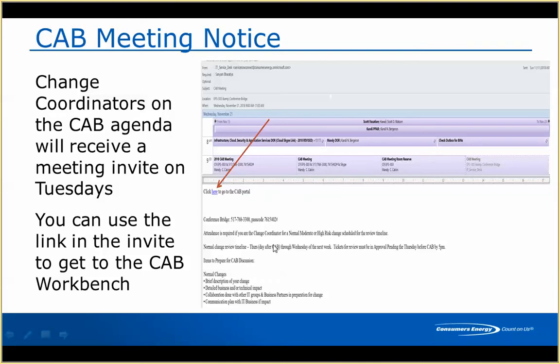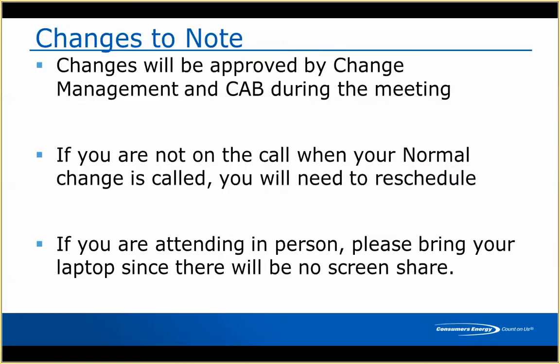The meeting request has the same information as our current CAB meetings — the login number and the things you generally need to go over and be ready for when you come to CAB. One of the nice improvements is that changes will be approved by the change management team and the CAB team during the meeting, so you won't have to wait after the CAB meeting — sometimes the same day, the next day, or even Friday — to get approvals. You'll have an immediate answer during CAB.